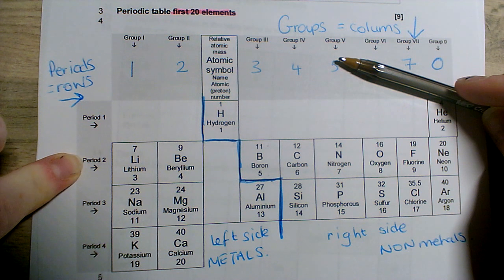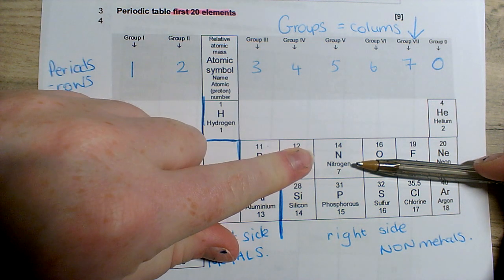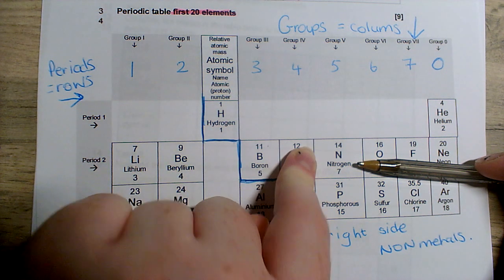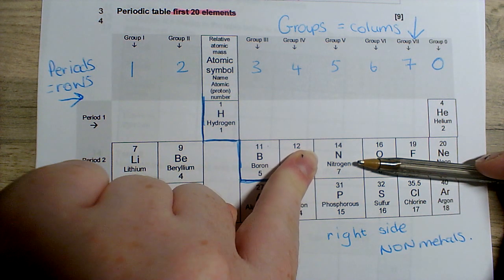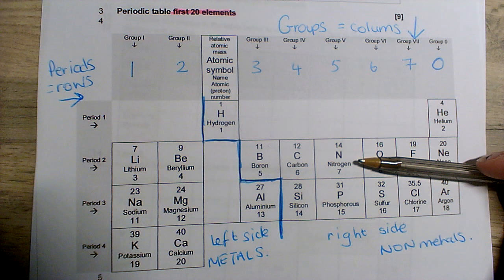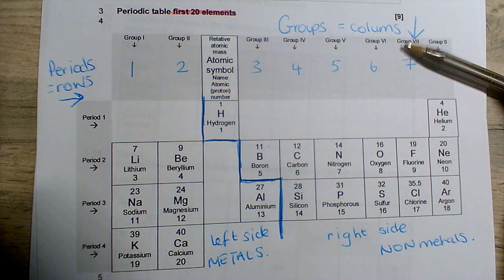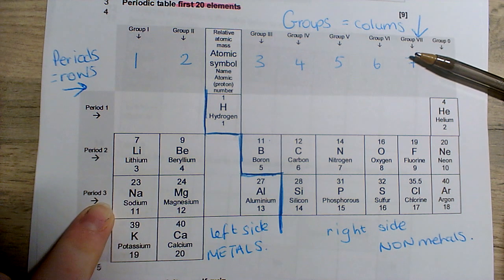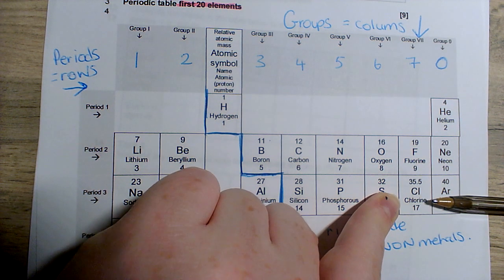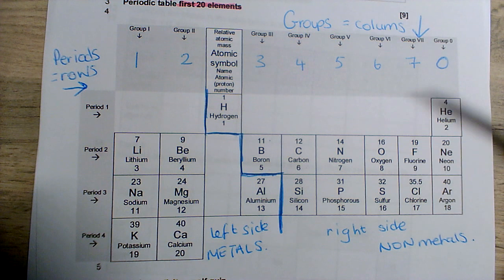Wherever the group and period meet is your answer. The element in group 5, period 2 is nitrogen — capital N. Another example: the element in group 7, period 3 is chlorine, represented by the symbol capital C, lowercase l.